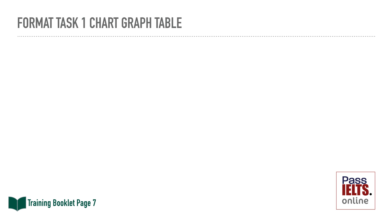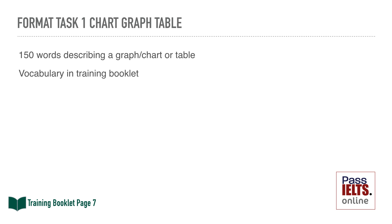In this first task, you have to describe a chart, a table, or a graph in 150 words. You will need to use appropriate vocabulary for describing trends, and you can find this vocabulary in your training booklets. You need to plan and structure your writing to help you finish in the 20 minutes, including all the information you need, to get a good score and to make sure you have enough words.